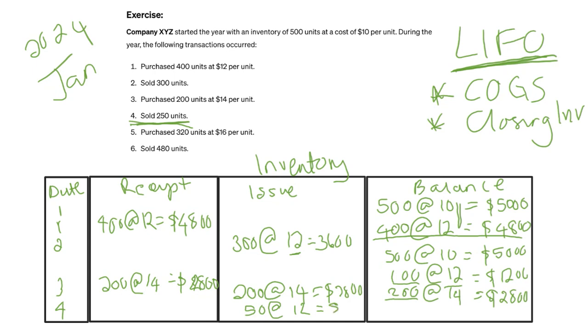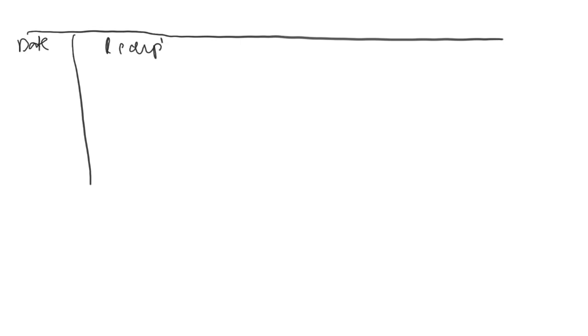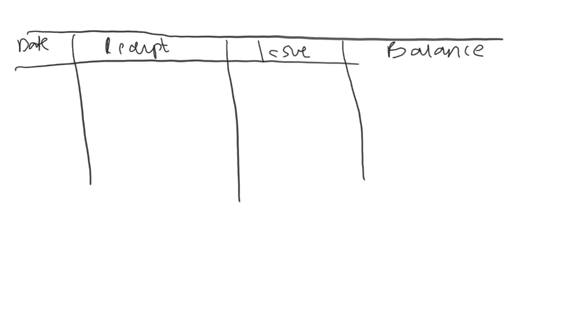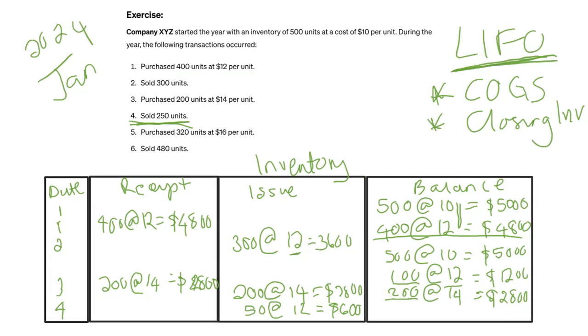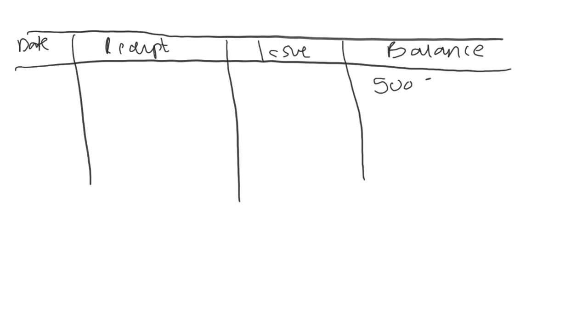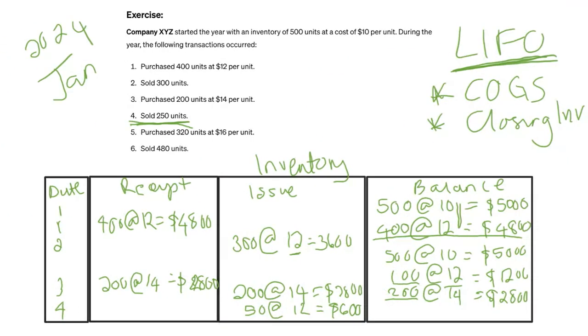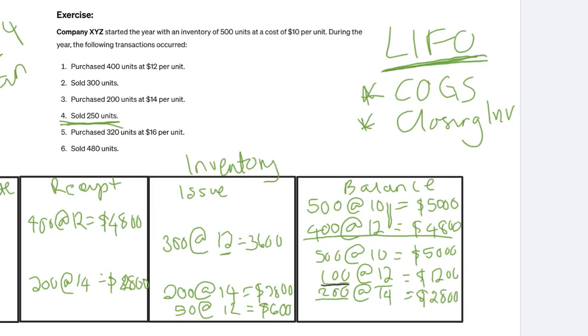Let's set up a new table with date, receipt, issue, and balance columns. Our remaining balance after January 4th is 500 units at $10 equal to $5,000, and 50 units at $12 equal to $600.